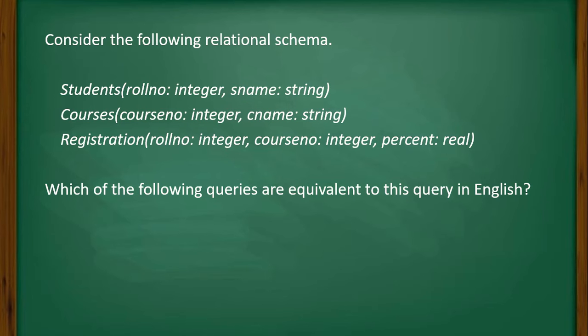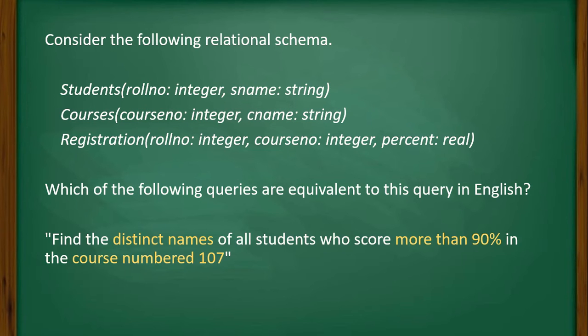Which of the following queries are equivalent to this query in English? The query is: find the distinct names of students who scored more than 90% in course number 107. That means we have to find the list of unique names of students who have scored 90% or more in course number 107.